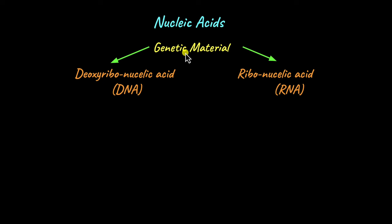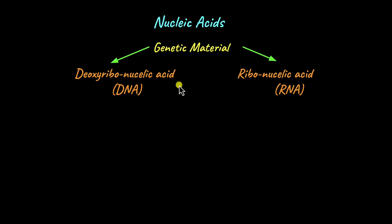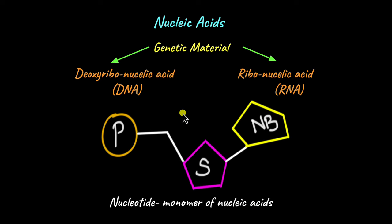Nucleic acids, like carbohydrates and proteins, are macromolecules, which means that they are made up of individual monomers attached to each other to form a large molecule. The individual monomer found in nucleic acids is known as a nucleotide.